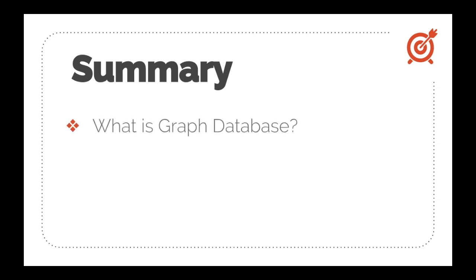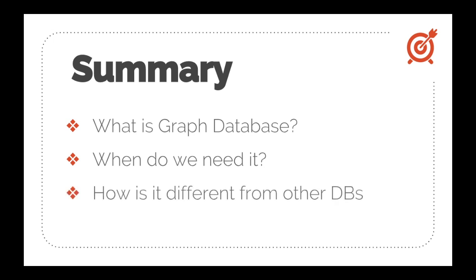To summarize: a graph database stores data in the form of graphs called nodes, with relationships between those nodes so you can query them easily based on relationships and their properties. We need it when we have many-to-many relationships, want low latency at large scale, and want a holistic view of relationships. It differs from other databases in that storing data as relationships reduces complexity and enables faster retrieval through a nested structure.